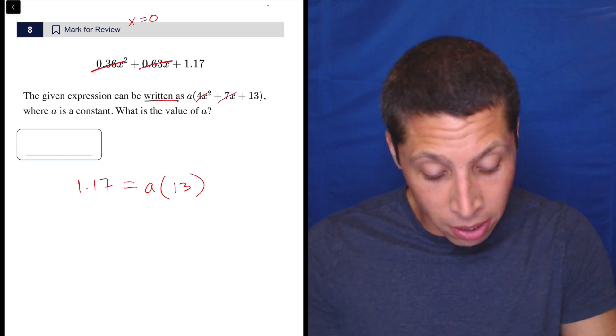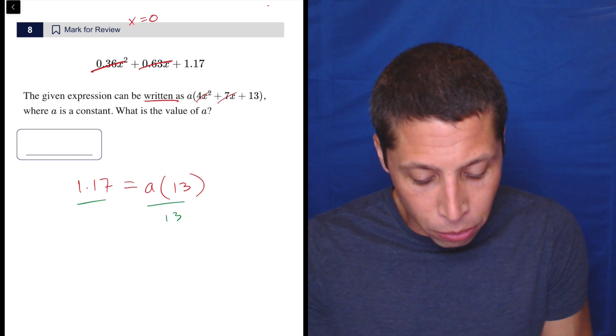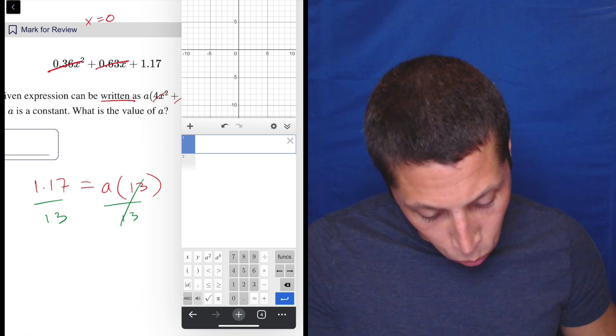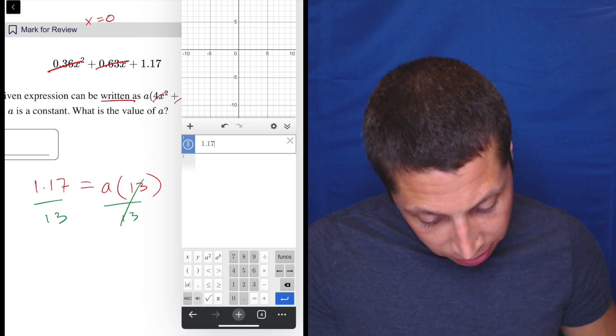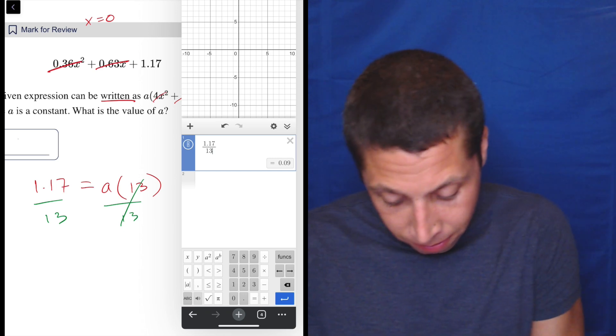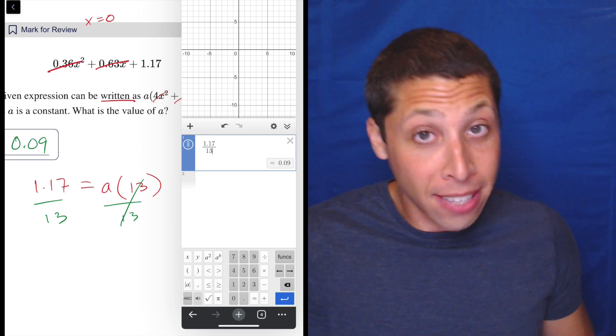So what do we do to solve this question? All you got to do is divide both sides by 13. So let's just put it in the calculator. We have 1.17 divided by 13. 0.09. 0.09. And that's the answer.